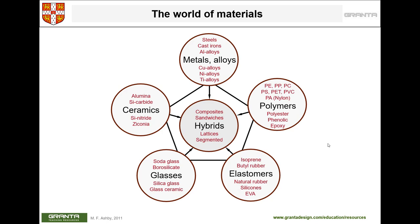Composites combine two material categories to keep their advantages and offset their weaknesses. For example, if we add carbon fiber to a polymer, we keep the light advantage of the polymer and offset its weakness in strength — giving us a carbon fiber reinforced polymer that is both strong and light. That's when composites come into play.